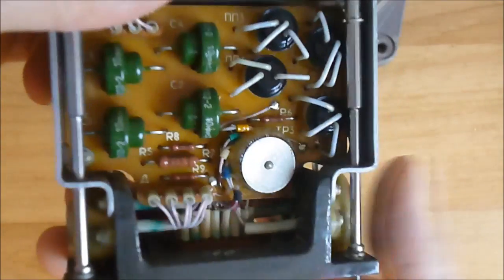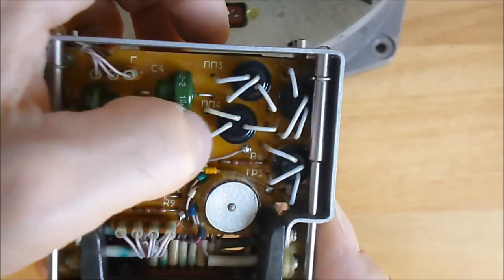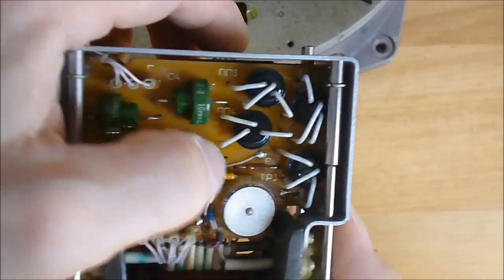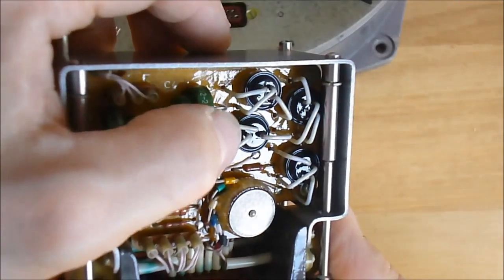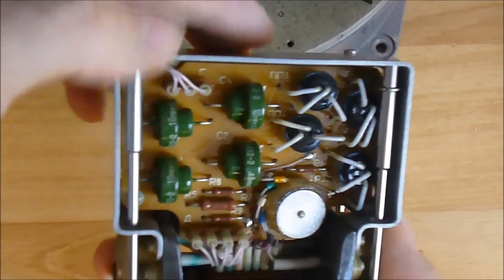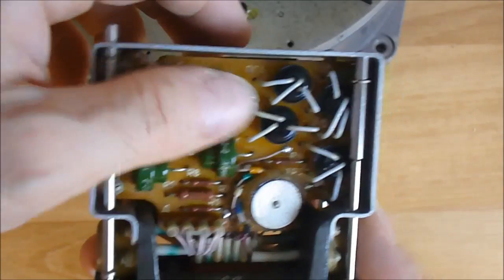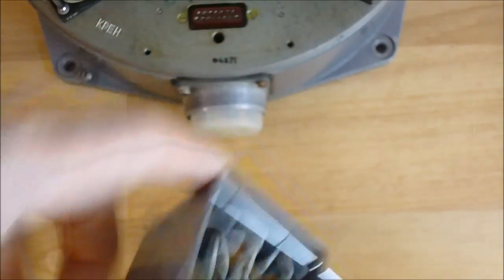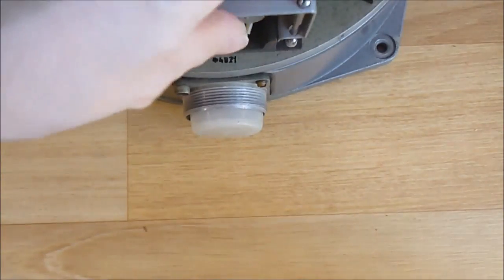And on this side we have dead bug mounted transistors in the black metal cans. One more toroidal transformer. And the green cap with this weird clip. But for me it is just something usual.